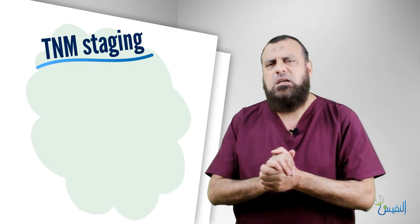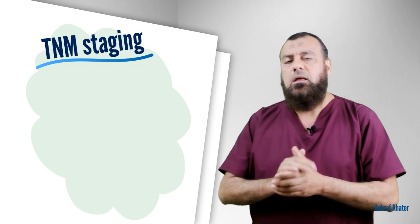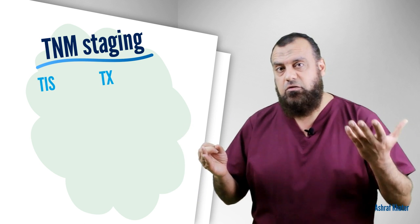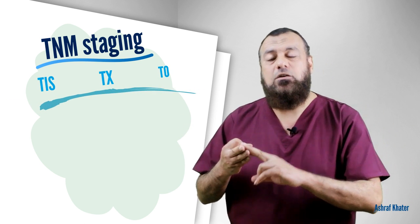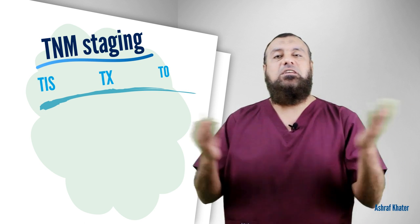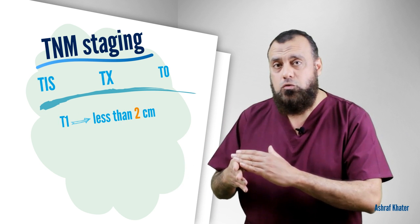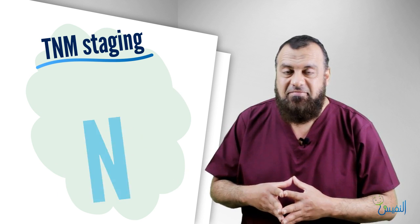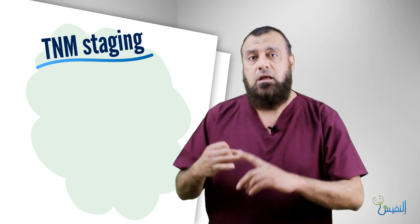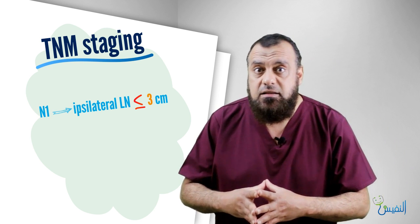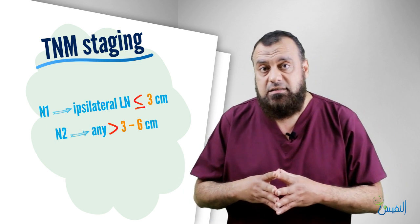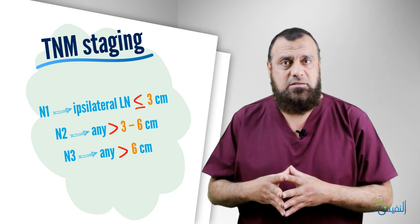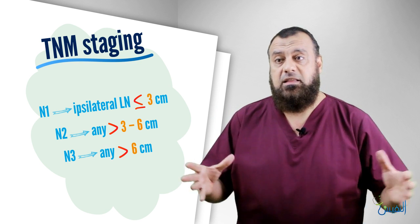The TNM staging of squamous cell carcinoma: TIS is Bowen's disease or erythroplasia of Queyrat. TX means the primary cannot be assessed. T0 is occult cancer — there is lymph node metastasis but no primary tumor. T1 is below 2 cm. T2 is 2 to 4 cm. T3 is more than 4 cm. T4 involves invasion of surrounding structures. For N: N0 means no lymph nodes involved; N1 is ipsilateral lymph node less than 3 cm; N2 is ipsilateral or contralateral, 3 to 6 cm; N3 is more than 6 cm. For M: M0 is no distant metastasis and M1 is the presence of distant metastasis.